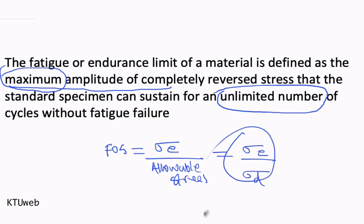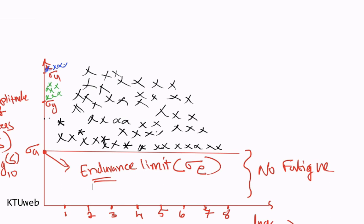This equation will be useful when you design an element which undergoes dynamic loading, and it has a wide range of applications. When elements like gears, crankshafts, or connecting rods undergo continuous cyclic loading, you need this limitation to know at which amplitude this material will give you an infinite number of cycles. If you design these elements below their endurance limit, they will not fail — theoretically speaking, for almost infinite number of cycles.